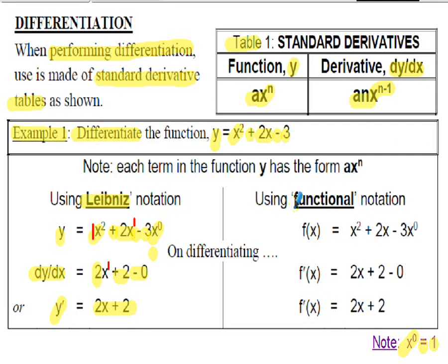If we now show the function notation for the same differentiation, we start with f(x) = x² + 2x − 3x⁰ on the left-hand side. When we differentiate, we write f′(x) instead of dy/dx. Everything else is exactly the same — just a different type of notation. We'll be using both notations in the work that follows.